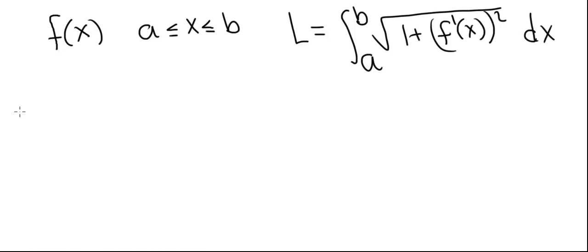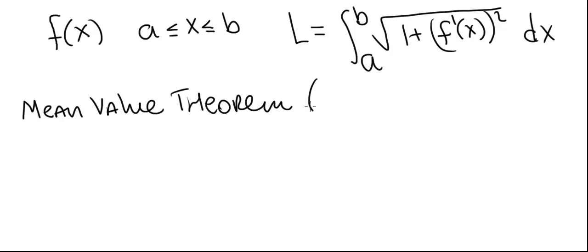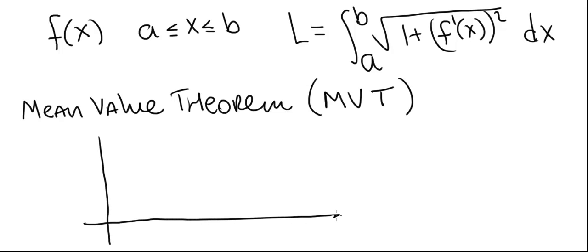Before we derive this formula, let's review the Mean Value Theorem — we'll abbreviate it as MVT. The Mean Value Theorem says the following: suppose we have a function that is differentiable, defined over an interval. Let's call the left endpoint xi minus 1 and the right endpoint xi. This function is differentiable over this interval and it may look something like this.